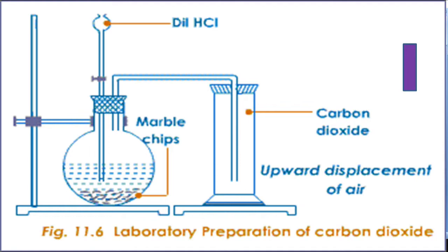We can confirm the prepared gas is carbon dioxide when we add or keep moist blue litmus paper in the gas jar. It turns into red color.